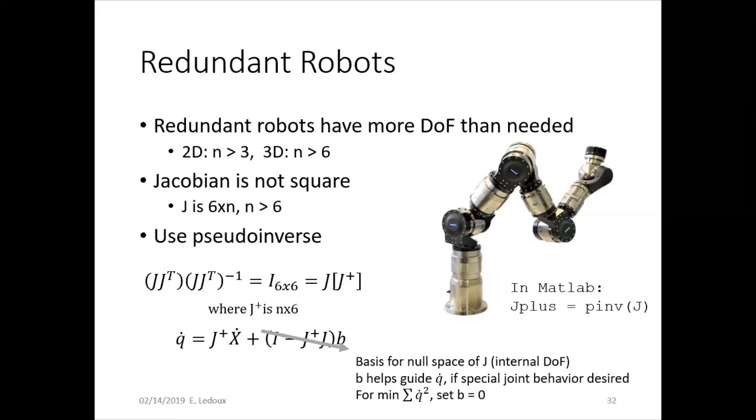Then you're multiplying two square matrices by each other, but it's kind of like an undoing thing. So that comes up to be J times J plus, where J plus is n by six. Then you can use that pseudo inverse to find the joint velocities by multiplying it by the end effector velocity.